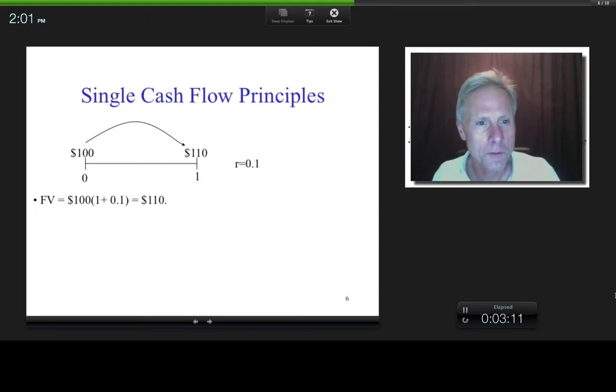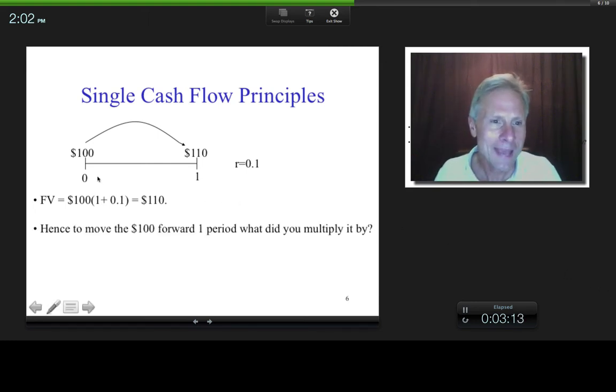So here's my question for you, okay? When I began with this $100, to move it forward one period, what did I multiply it by? So I began with $100. What did I multiply it by to turn it into $110? Well, it's right here, right? $1.1, right?